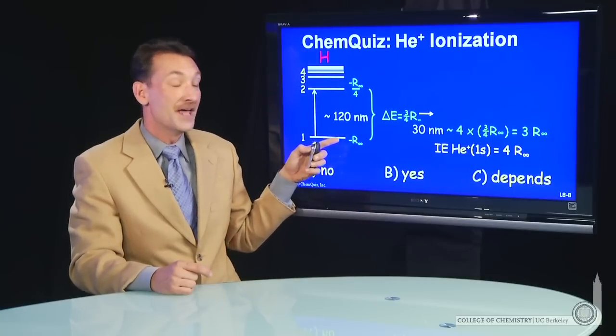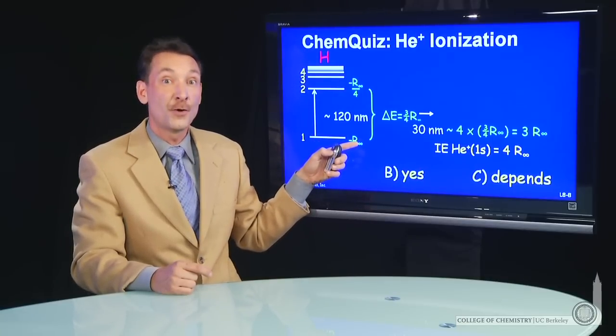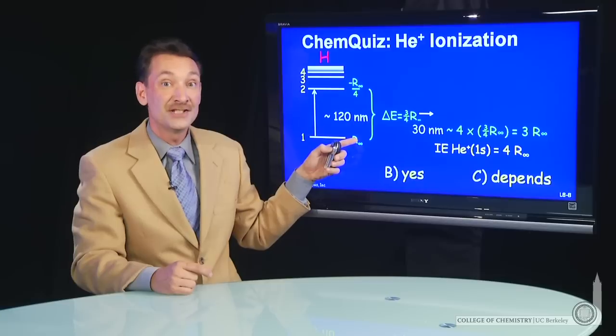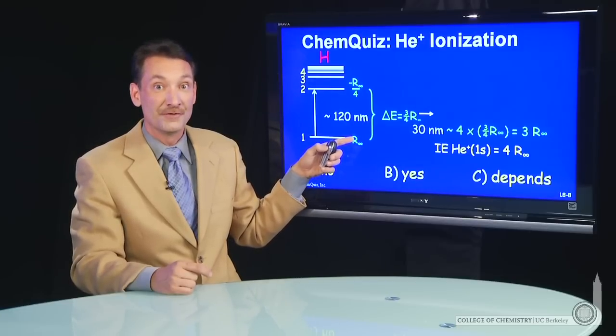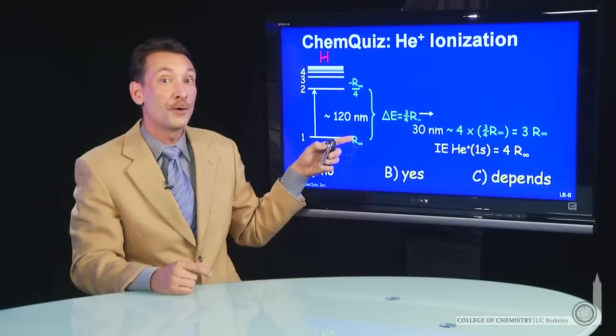n equals 1, that energy is minus 4 R. It's z squared over n squared. So z is 2 for helium. So it's minus four Rydbergs.